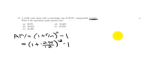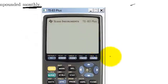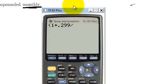And you'd just have to plug that into the calculator. So, let me go ahead and do that. It'll be 1 plus .299 divided by 12.